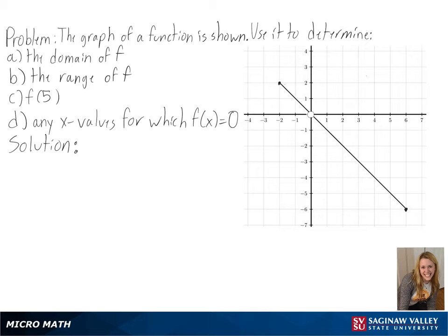So first we are needing to find the domain of f, or the input value for our function. In this case, x begins at negative 2, then has a hole at 0, and continues to 6. So our input will be negative 2 to 0, and 0 to 6.